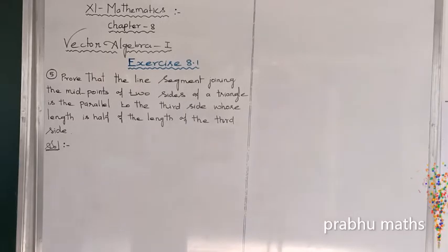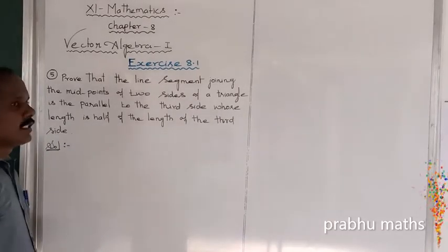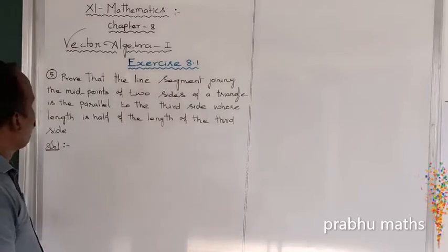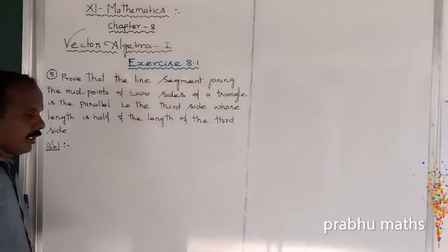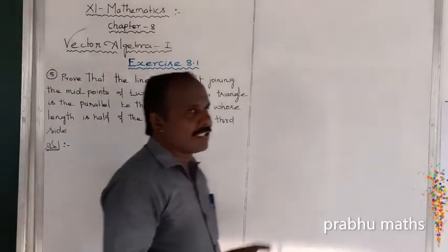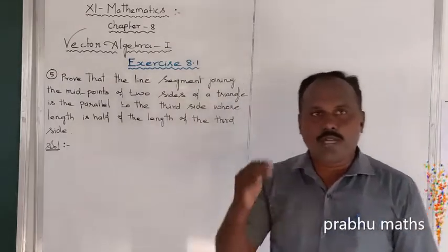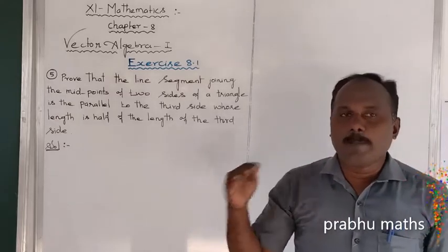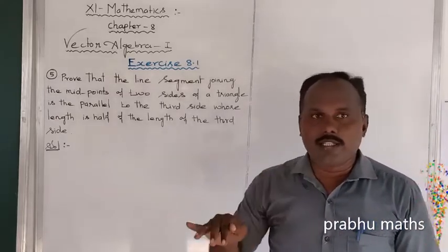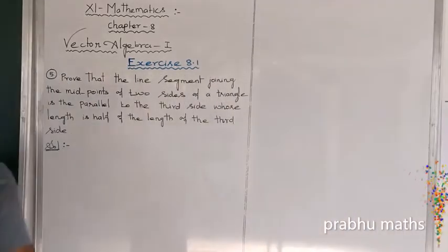Exercise 8.1: Prove that the line segment joining the midpoints of two sides of a triangle is parallel to the third side, whose length is half of the length of the third side. For any triangle, you have to select any two sides, find the midpoints, join them, and that line segment should be parallel to the third side — that is the concept of this problem.